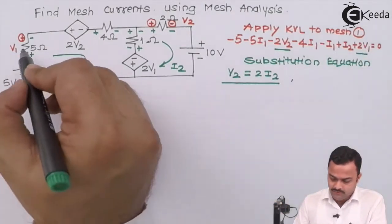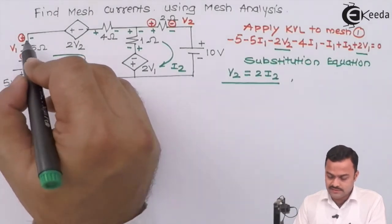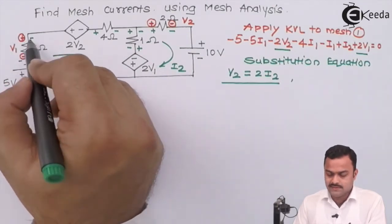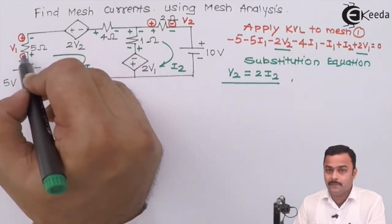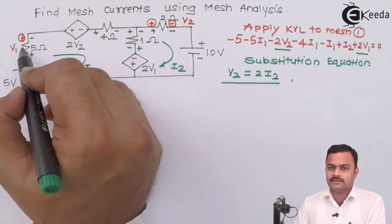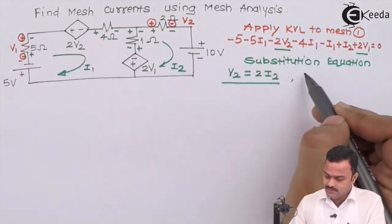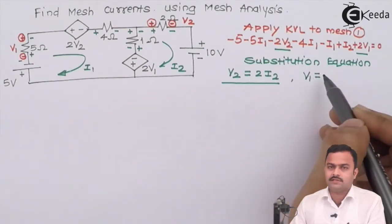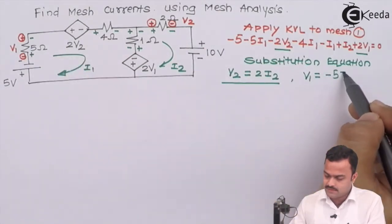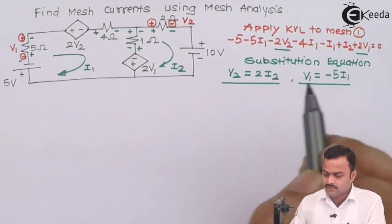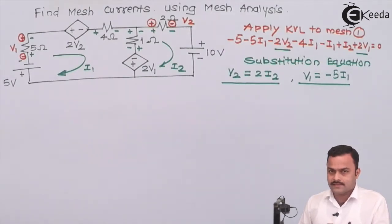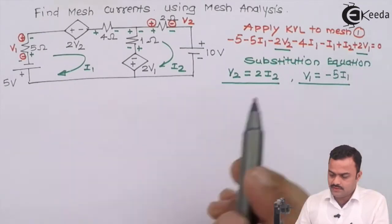Now the substitution for V1: V1 is the voltage across the 5-ohm resistor. But if you see carefully, their encircled polarity and our green-ink polarity are mismatching. Whenever the two polarities are mismatching, the voltage must be written with a negative sign. So V1 = -5·I1. Our substitution equations are: V2 = 2·I2 and V1 = -5·I1.